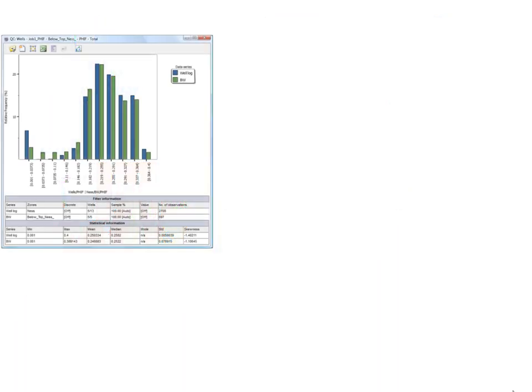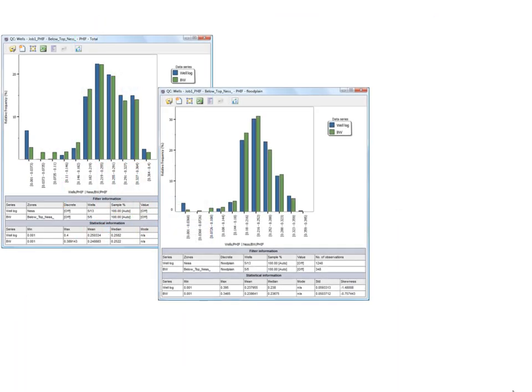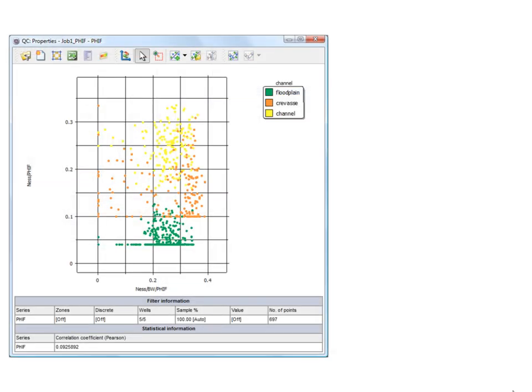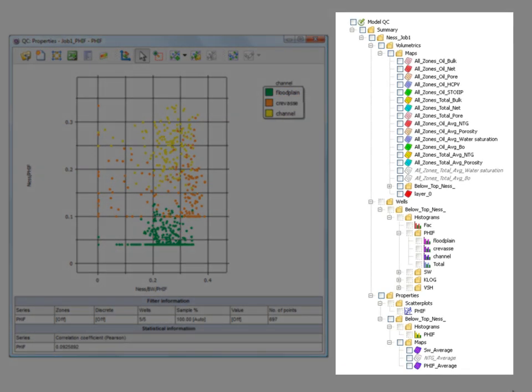RMS 2010.1 also features new tools that offer an efficient and easy way to quality control property models. With just a few button clicks, you can now produce all the necessary charts and maps to check consistency between the property models and the input data. These maps and charts are organized in a single, separate folder, providing easy access for both new and experienced RMS users.